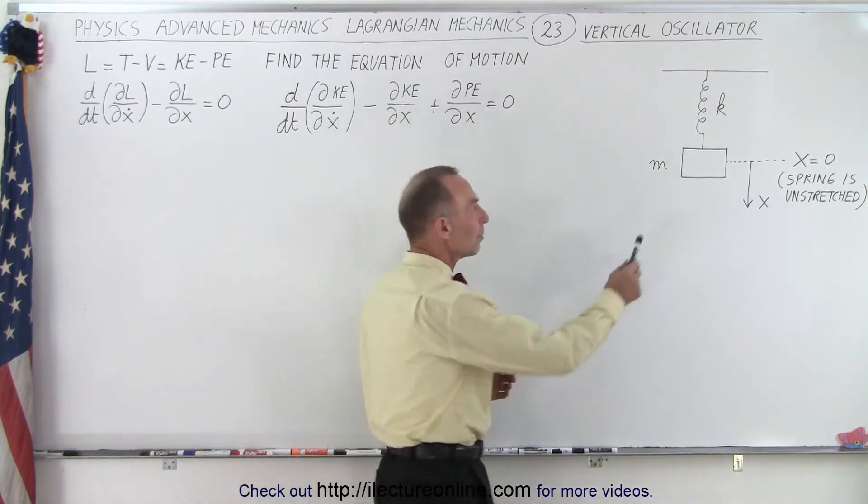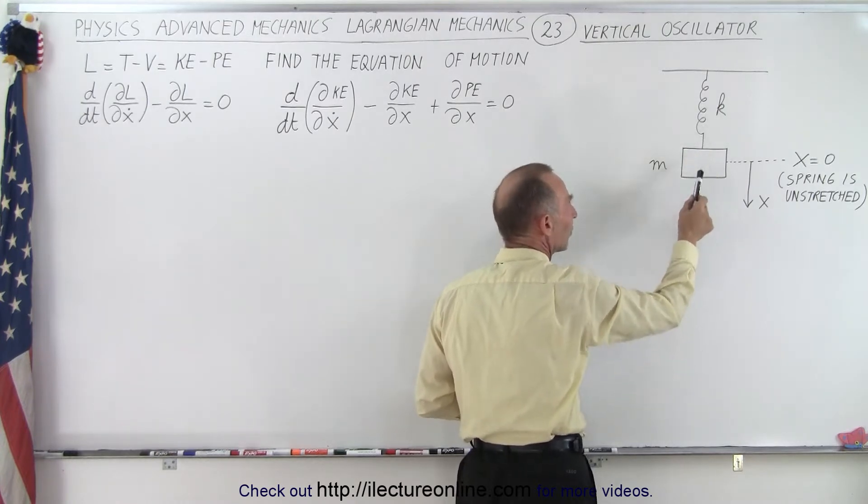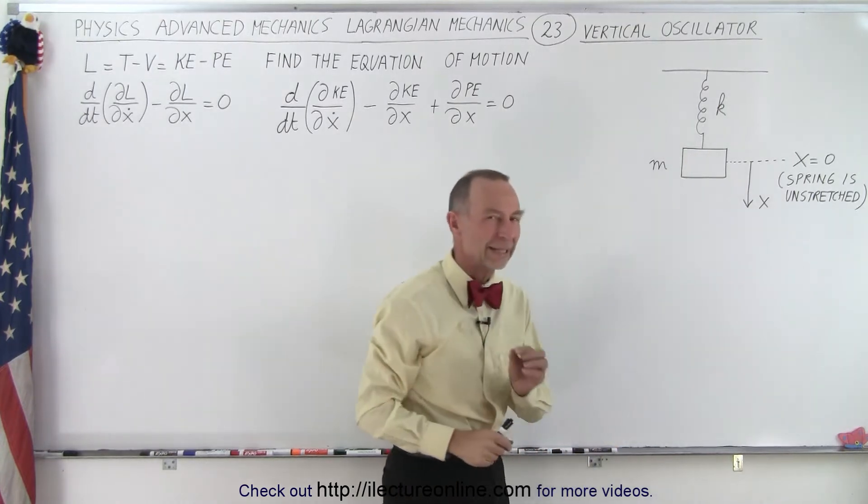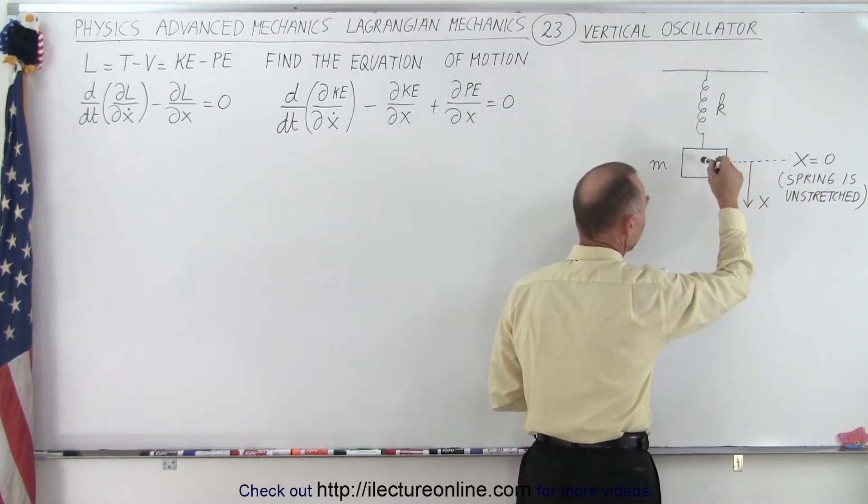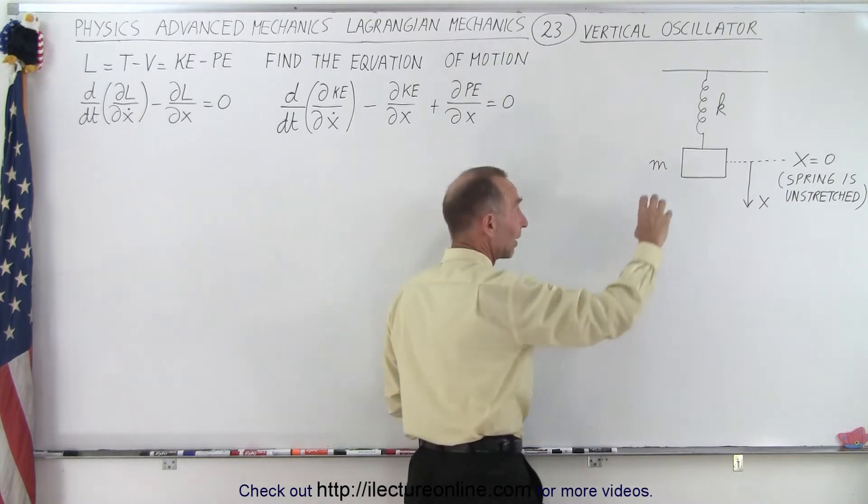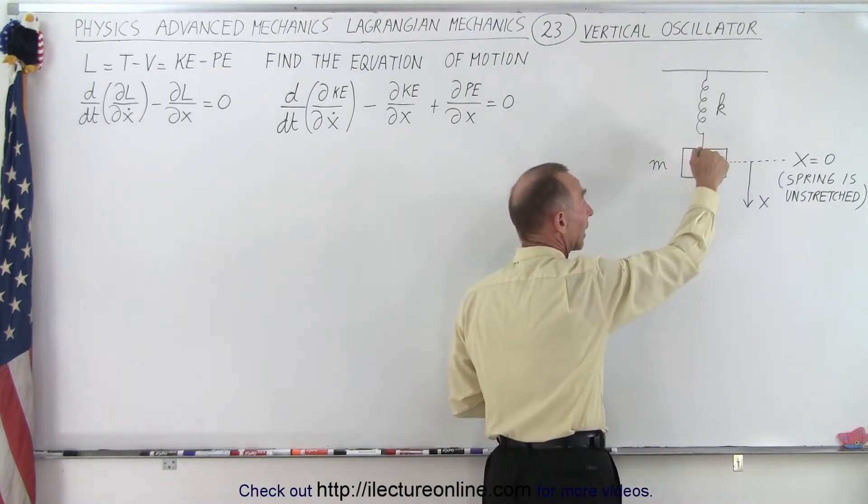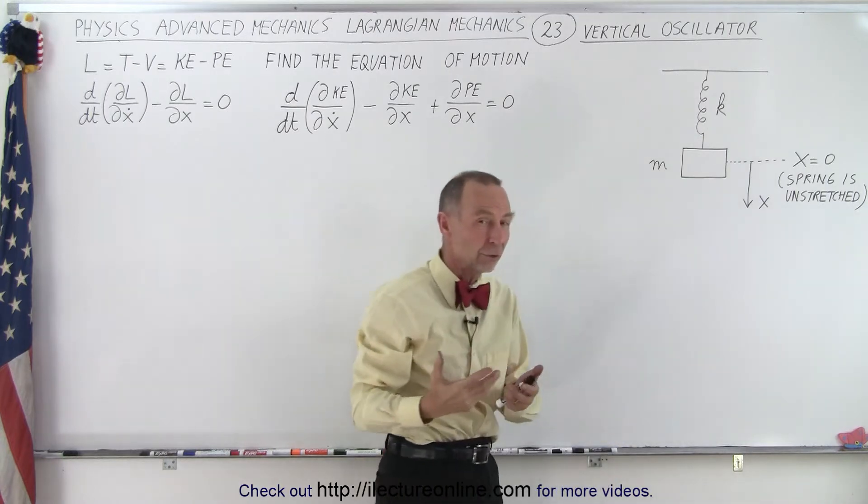Normally the equilibrium point is at the point where the force of the spring is balanced by the gravitational force. But here we're going to say that when x equals zero at the equilibrium point, the spring is unstretched. So if that's the case and you let go, at that moment there'll be an acceleration downward because of the acceleration due to gravity.